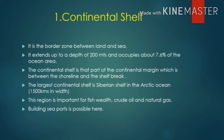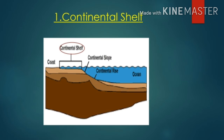The first part is the continental shelf. It is the border zone between land and sea, extending up to a depth of 200 meters and occupying about 7.6 percent of the total ocean area. It lies between the shoreline and the shelf break. The largest continental shelf is the Siberian Shelf in the Arctic Ocean, with a width of 1,500 kilometers. This region is important for fish, crude oil, and natural gas, and seaports are also built here.